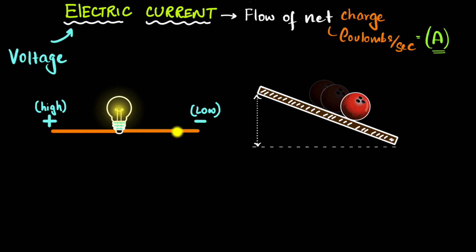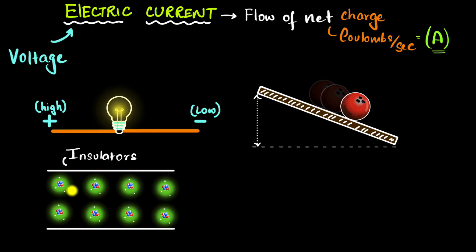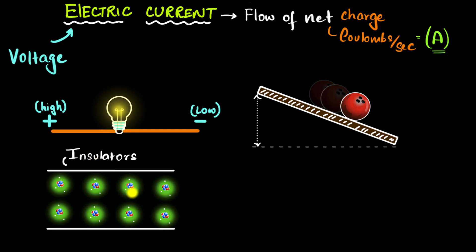Not all materials have free charges. Glass and plastic, for example, don't have free charges — the electrons inside their atoms are very tightly bound, so there are no free electrons to move. If you put a voltage across them, you'll get no current. We call such materials insulators. Glass, wood, and plastic are examples of insulators.